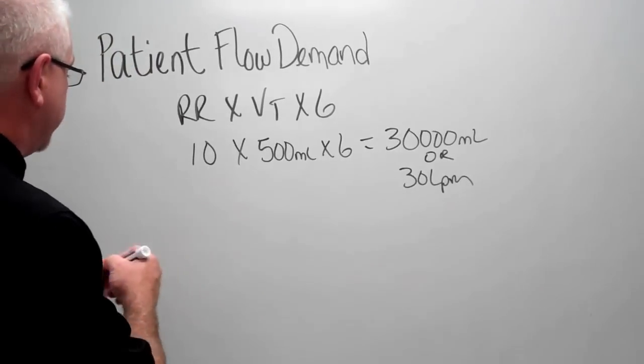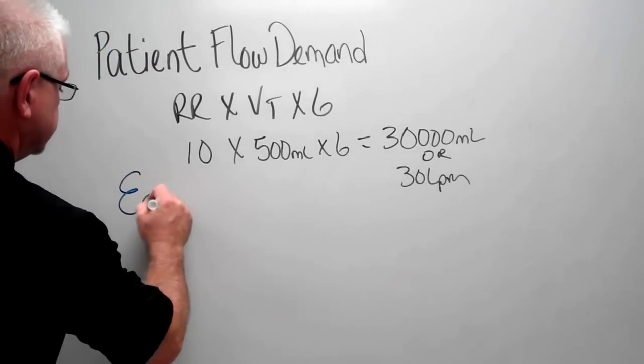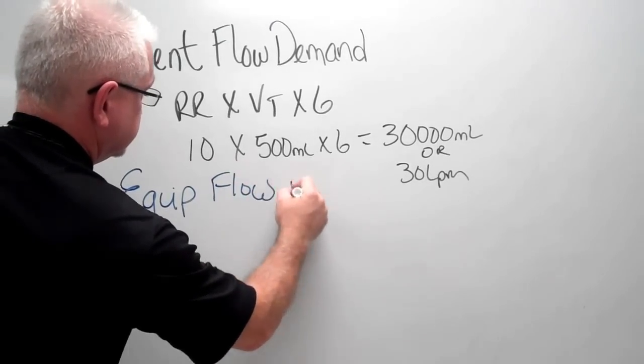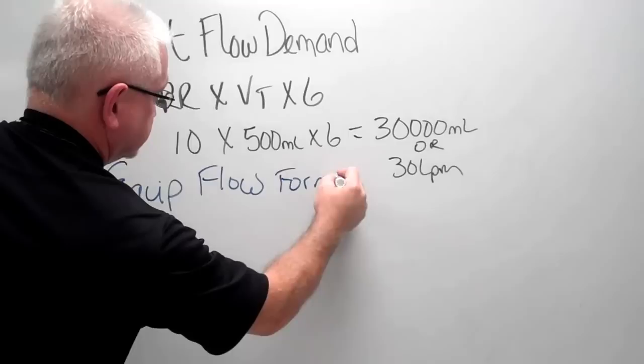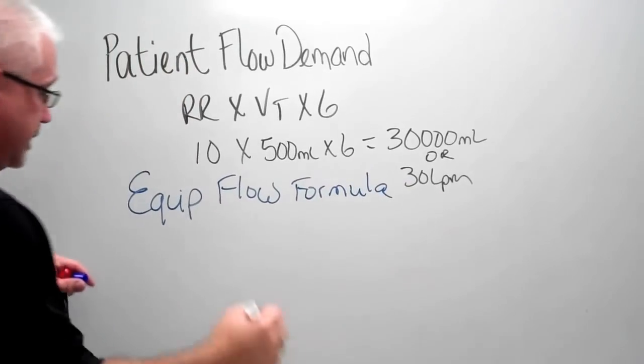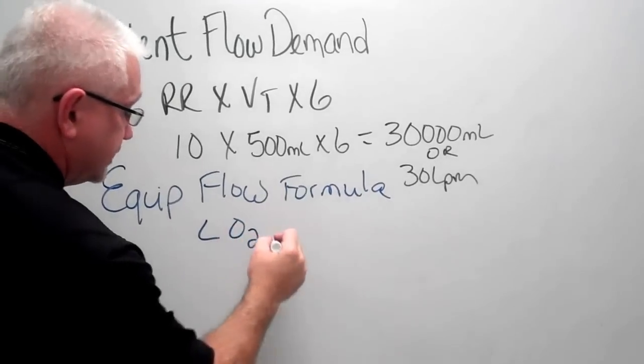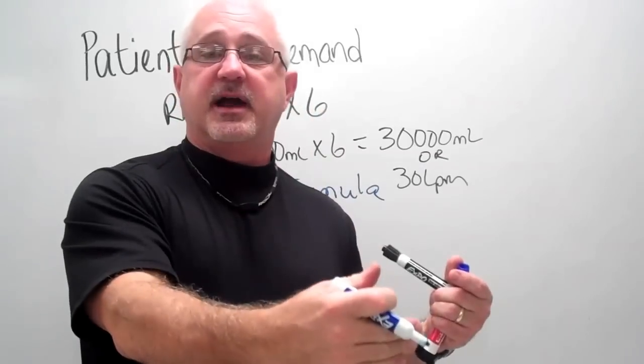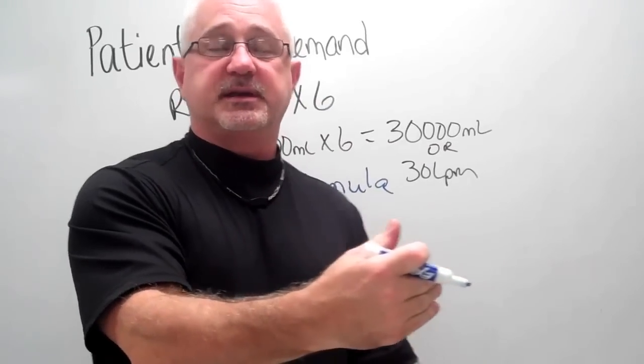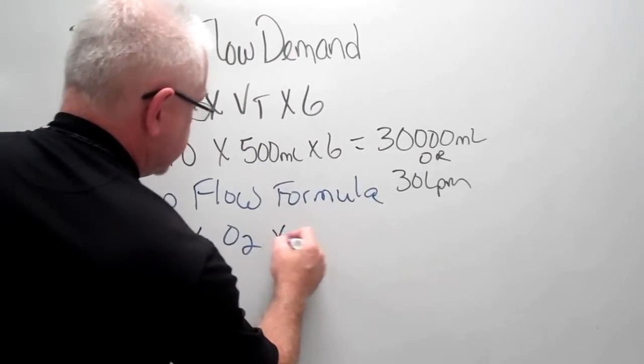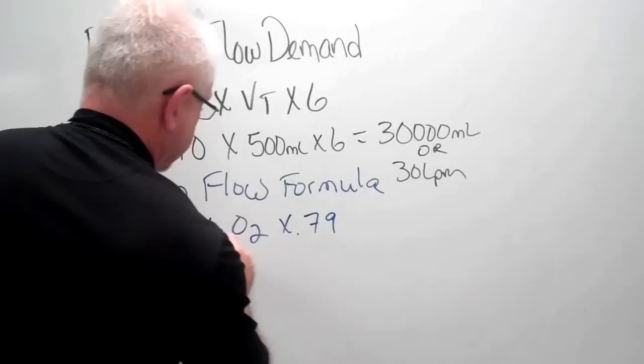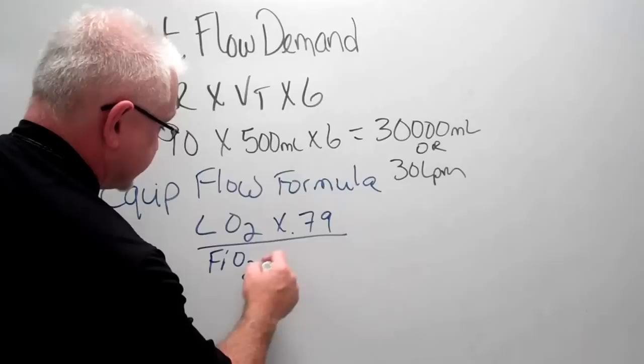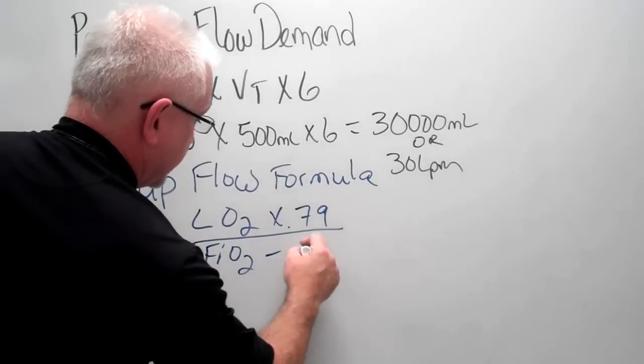And our equipment flow formula is the liters of O2 being delivered in the device, what's driving the oxygen device that we're placing on the patient, times 0.79 divided by the FiO2 being delivered by the oxygen device minus 0.21.